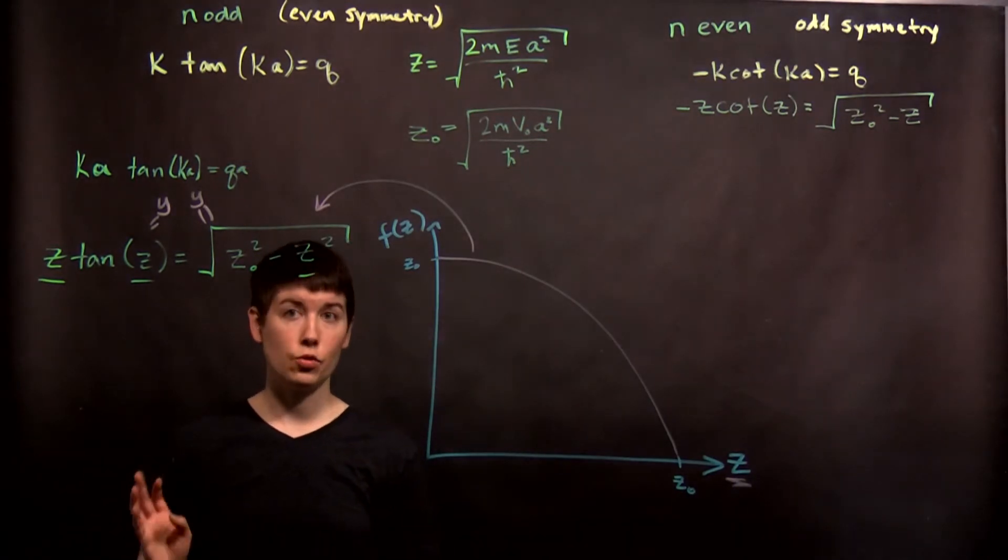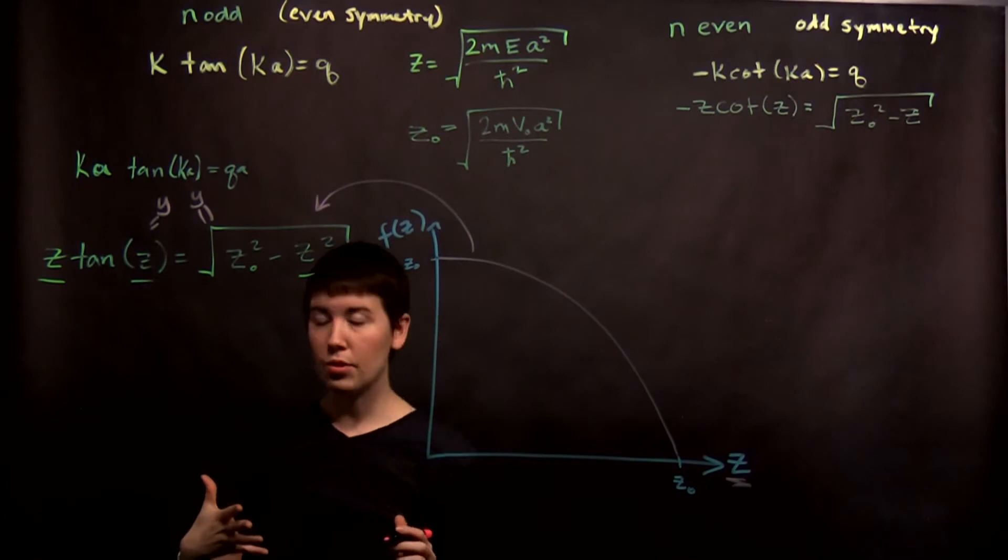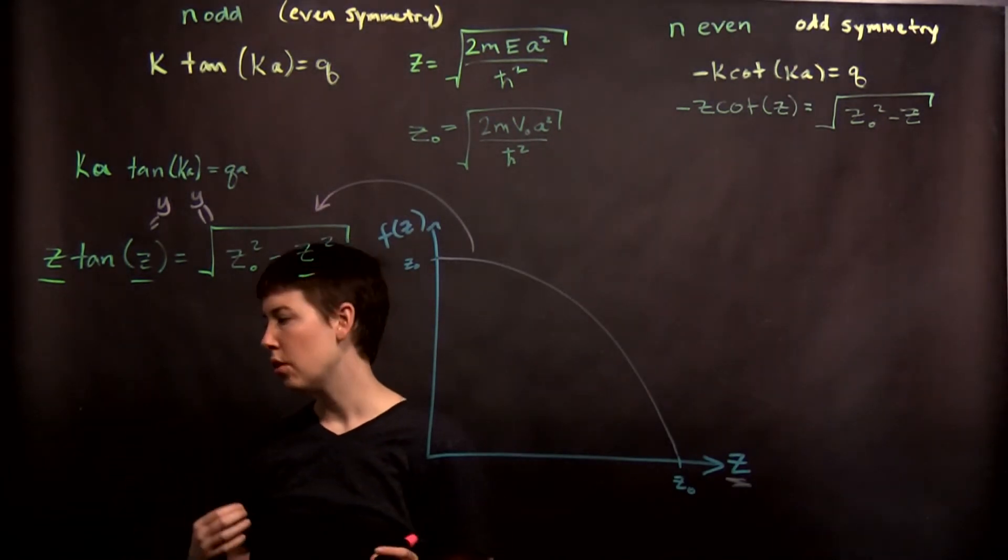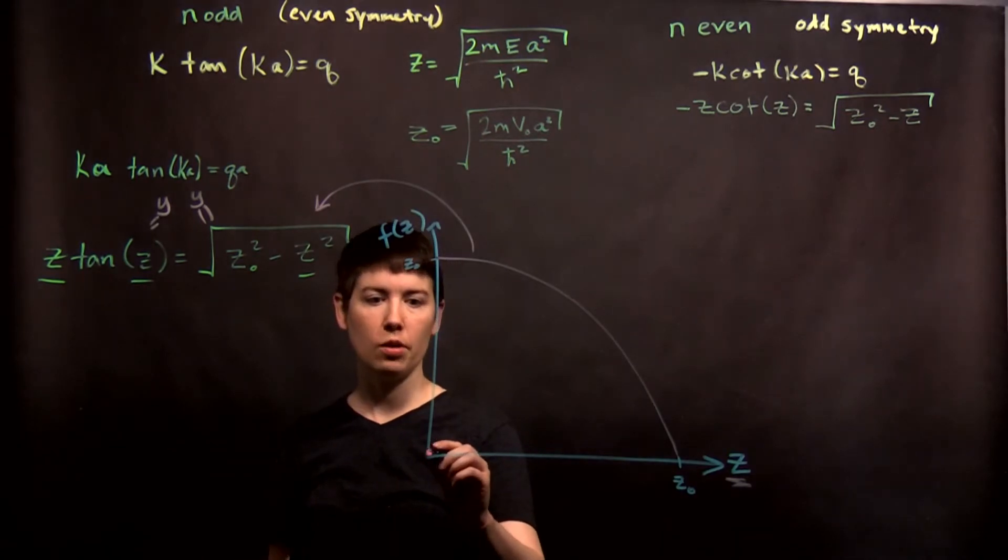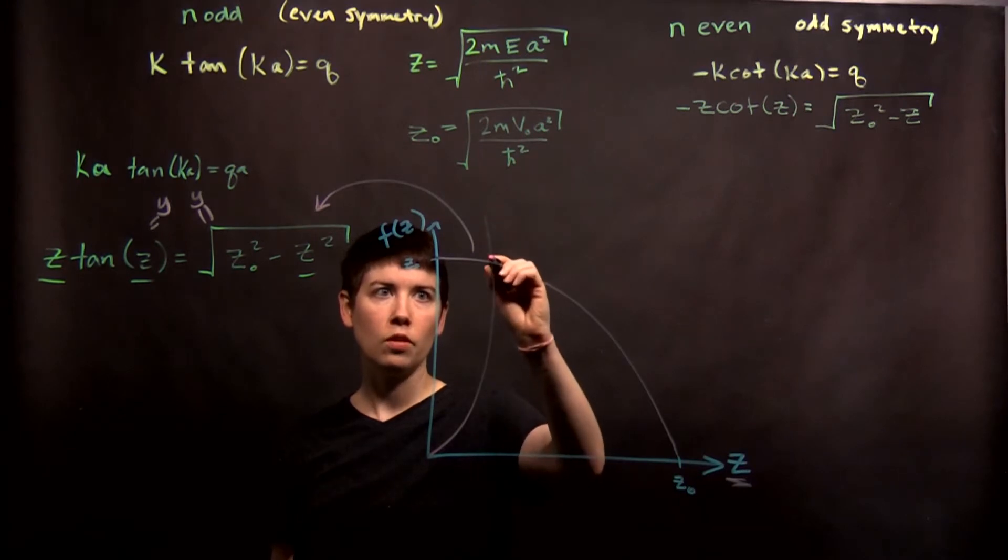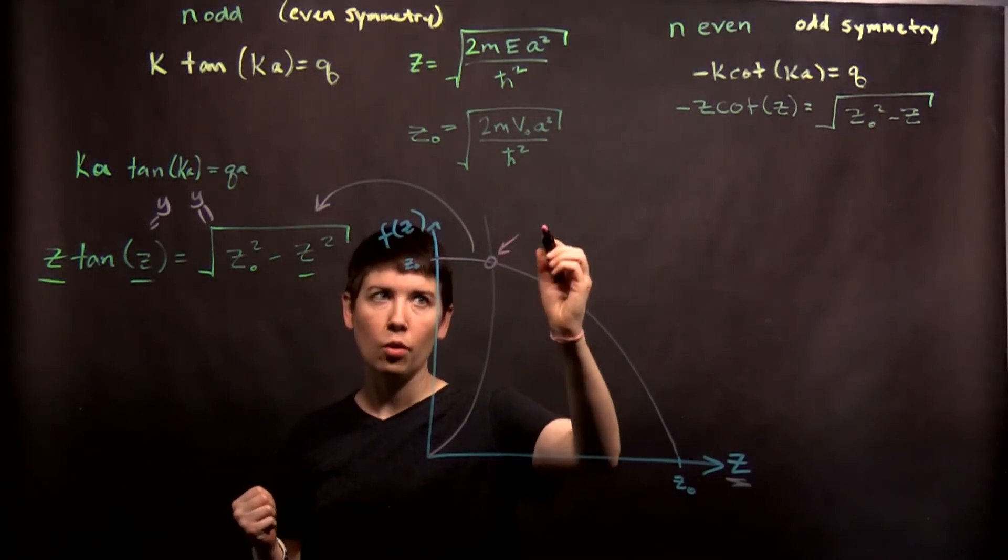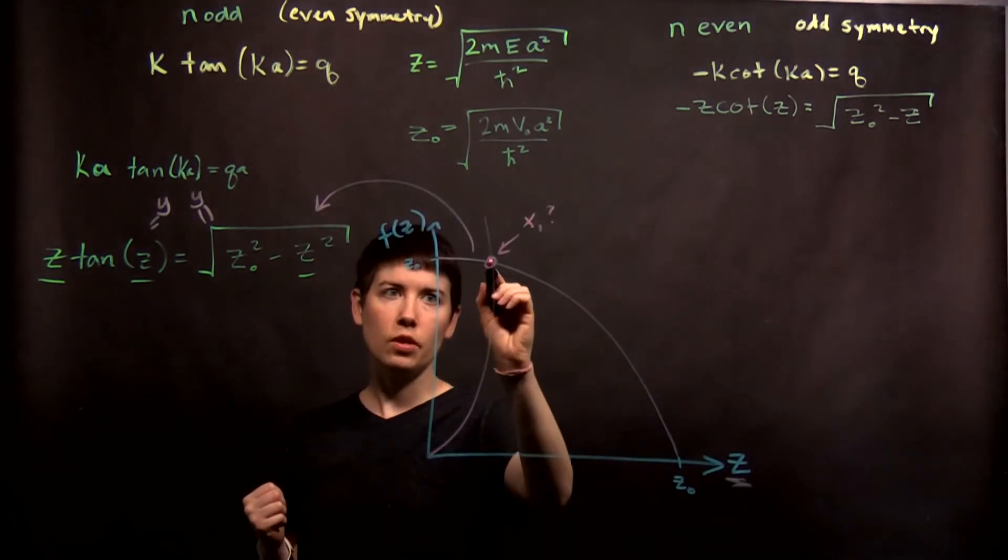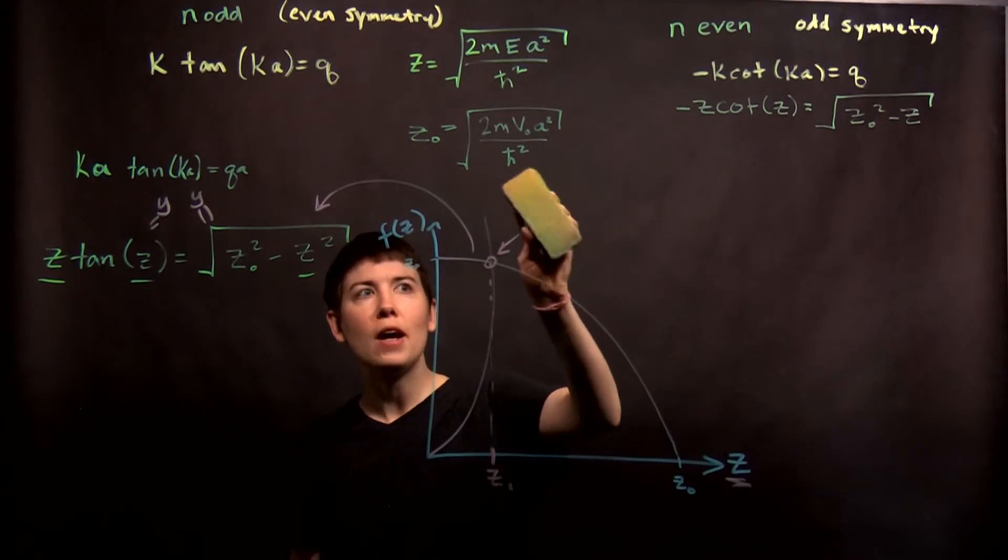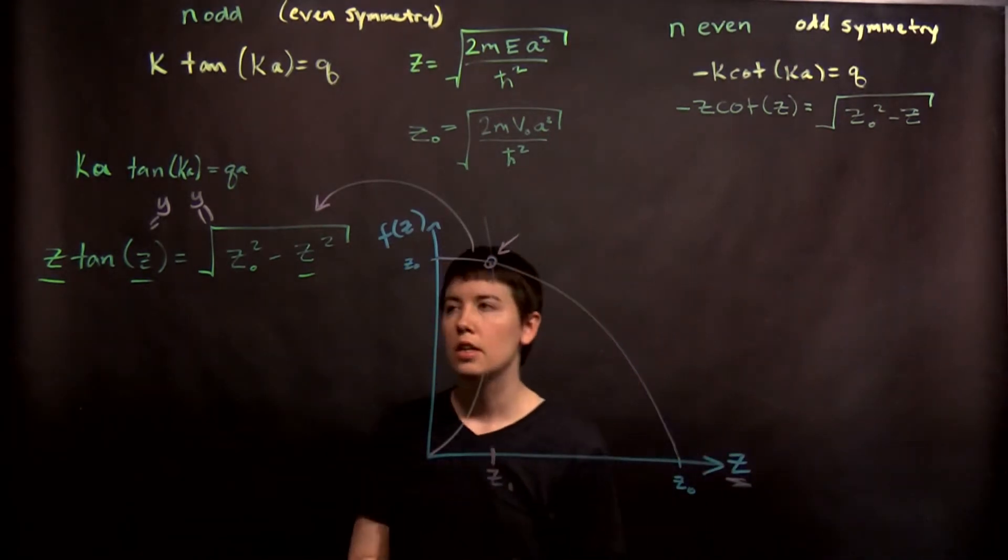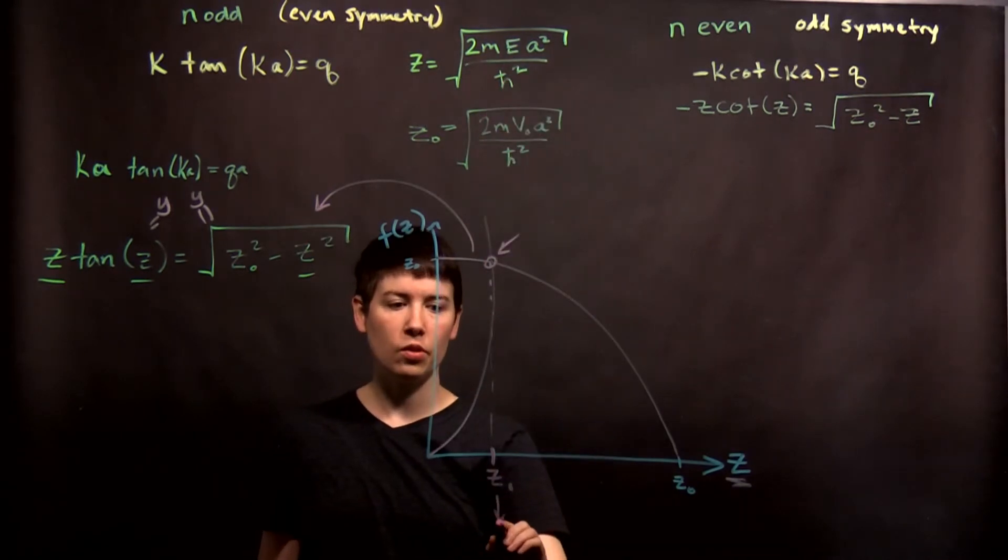So now here's where it's a little bit tricky. To find all of the allowed energies, remember these are our n values that are odd, these are our n values of even. We would need to plot both of these, and they have slightly different shapes. So first we would be finding n equals 1. That would be coming from this one, so z tan z. So z tan z would start at 0, and then you get some function that comes up. There's an intersection point. So you then ask the question, what is its z value? So you find that intersection point and you're interested in the z value. This then is your z1 and you go back up here and you get e1 from knowing what z1 is.